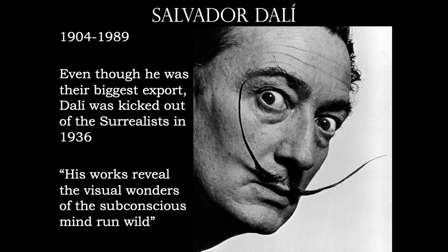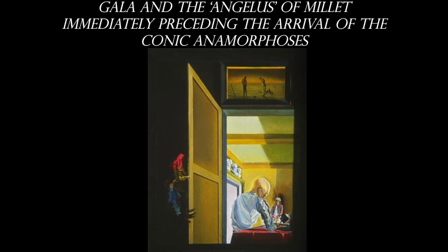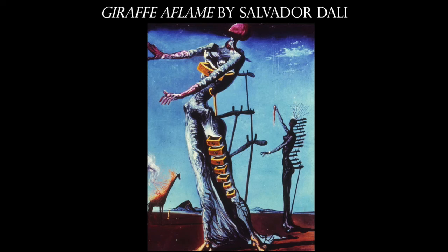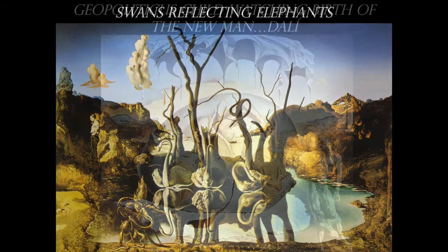Salvador Dalí is the name synonymous with Surrealism. But Surrealism was very much like a club — you could join and get kicked out — and Dalí was kicked out of the Surrealist movement in 1936. His most famous works include The Persistence of Memory, a painting with a giraffe on fire in the distance, and a work where swans in a pond reflect as elephants. Dalí himself appears in that last painting off to the left.